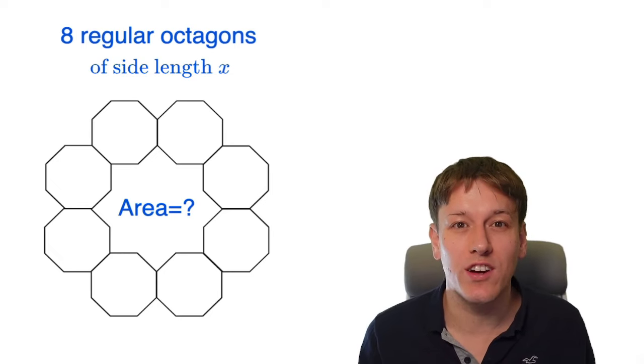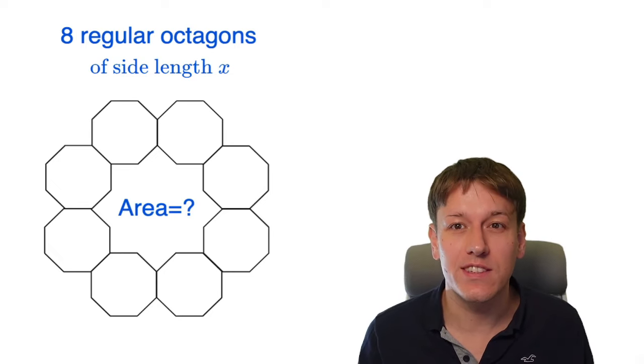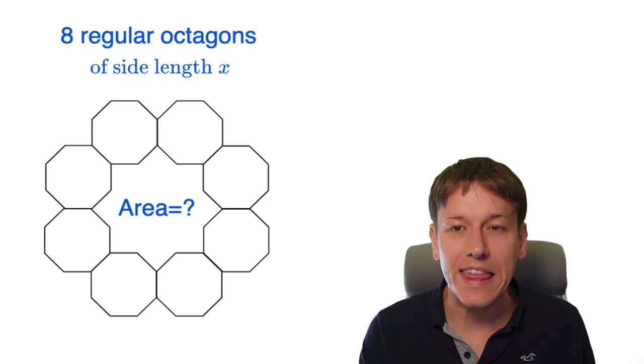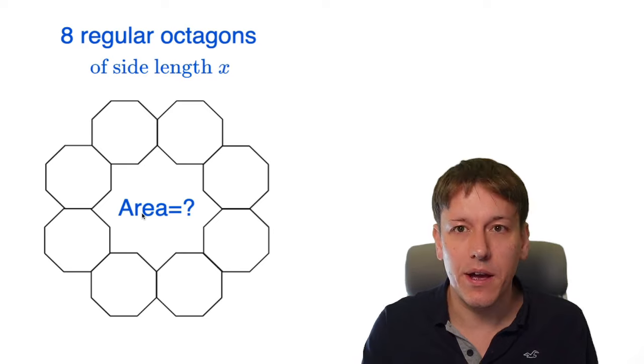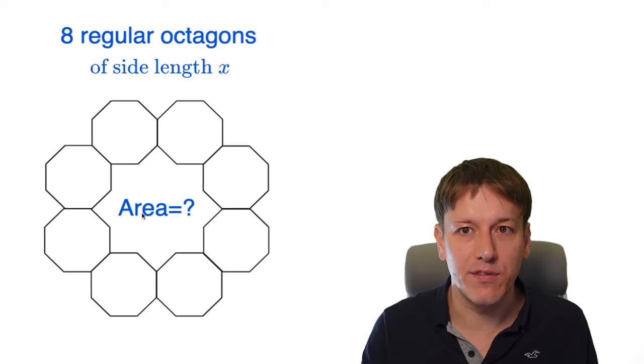The question tells us that there are eight regular octagons and all of their side lengths are x, so they're congruent regular octagons, and we want to find the area of the star shape that is made by putting them together here in the middle of the diagram.